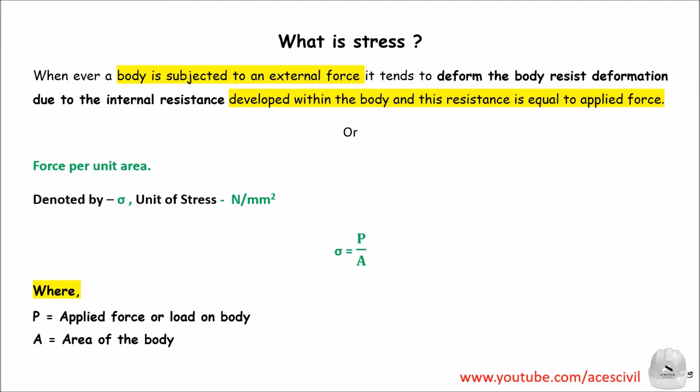First we will discuss about stress. Stress is normally defined as force per unit area. But the proper definition is: whenever a body is subjected to an external force, it tends to deform. To resist the deformation, internal resistance is developed within the body, and that resistance is equal to the applied force. Stress is denoted by sigma and its unit is Newton per millimeter square. The formula is sigma equals P upon A, where P is the applied load and A is the area of the body.